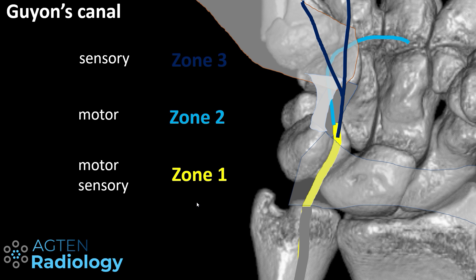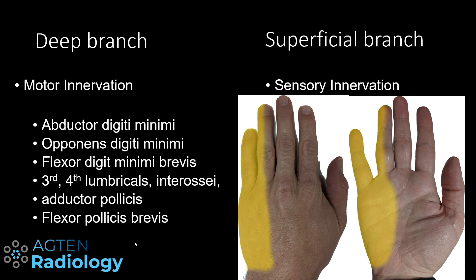If an ulnar nerve lesion lies within zone 1 — proximal to the division into deep and superficial branch — you will have symptoms affecting both motor and sensory function. If there is only a motor deficit, the lesion is in zone 2, affecting only the deep branch. Zone 3 affects the sensory branch with corresponding sensory symptoms. The muscles innervated by the deep branch include the abductor digiti minimi, opponens digiti minimi, flexor digiti minimi brevis — essentially all hypothenar musculature — as well as the third and fourth lumbricals, interossei, and also the adductor pollicis and flexor pollicis brevis on the radial side, due to the nerve's radial course distally.